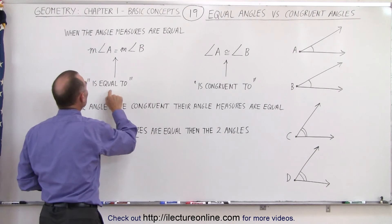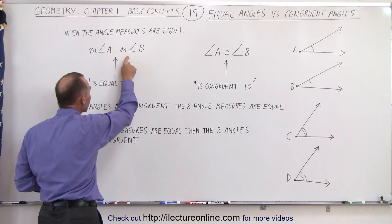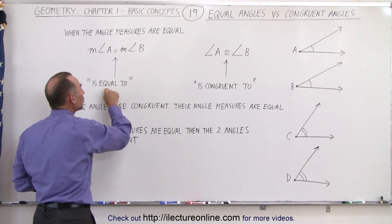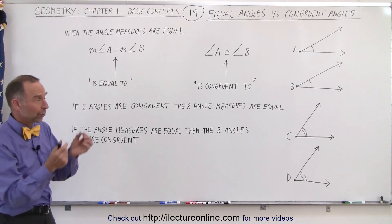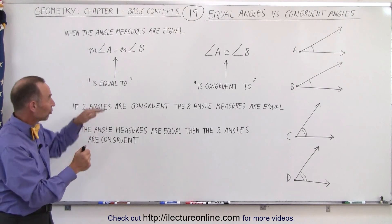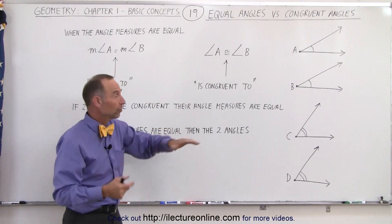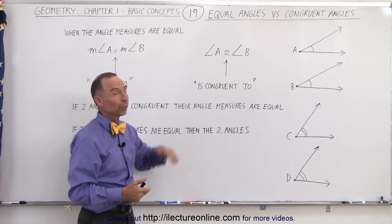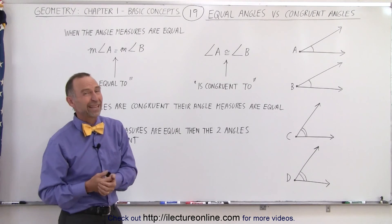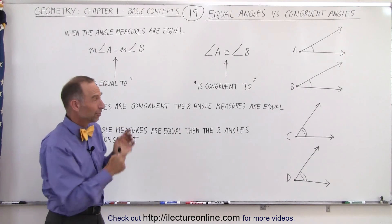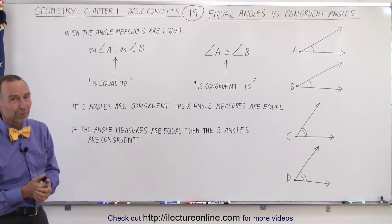So when we apply that to talking about the angles, we use the word congruent. If we use the comparison in terms of the angle measures, then we use the word equal. And that's the difference. If we're looking at comparing the angle measures, we use the word equal. If we're simply comparing the angles, then we use the word congruent. Essentially, we're saying the same thing — just make sure you understand the subtle difference between them.